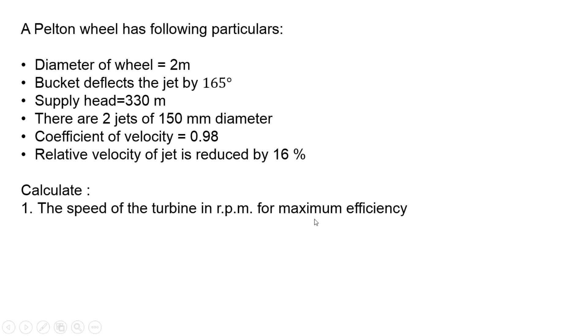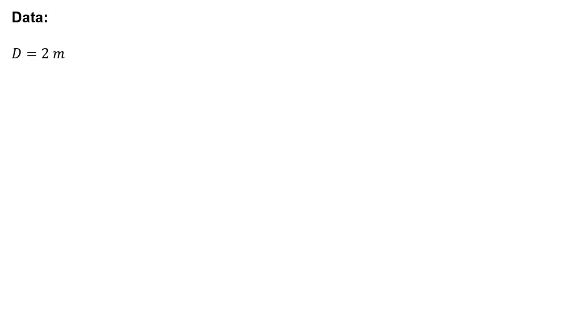We have to calculate the speed of the turbine in RPM for maximum efficiency condition — this is the important part. We also need to find the power lost in discharge, that is, the power loss at the exit which depends upon the exit velocity. So we have to draw the velocity triangles to find out the required quantities.